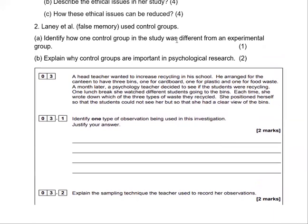From the same study, a control group was used. Identify how one control group in the study was different from an experimental group, and explain why control groups are important in psychological research. This question, I think, is from Edexcel.